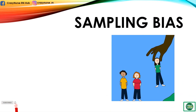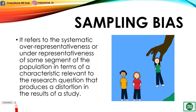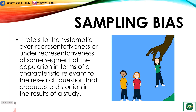Now let's discuss sampling bias. Sampling bias refers to the systematic over-representativeness or under-representativeness of some segment of the population in terms of a characteristic relevant to the research question that produces a distortion in the result of a study. Suppose you want to investigate patients' responsiveness to touch by nurses and you decide to use a sample of 50 patients meeting the eligibility criteria who enter the emergency room. You decide to omit the lady who looks hostile and a man who is angry. Doing this can lead to bias because response to touch may be affected by feelings towards nurses or their psychological state.